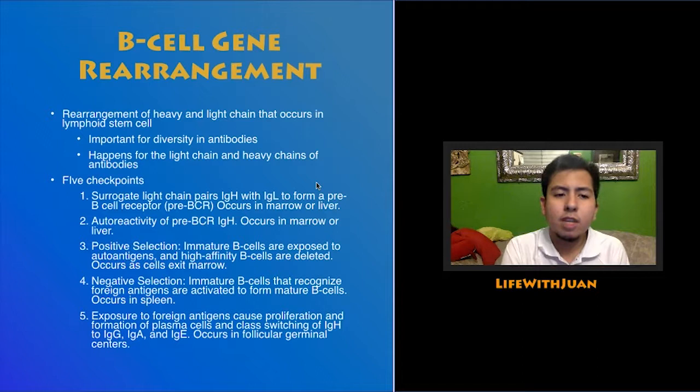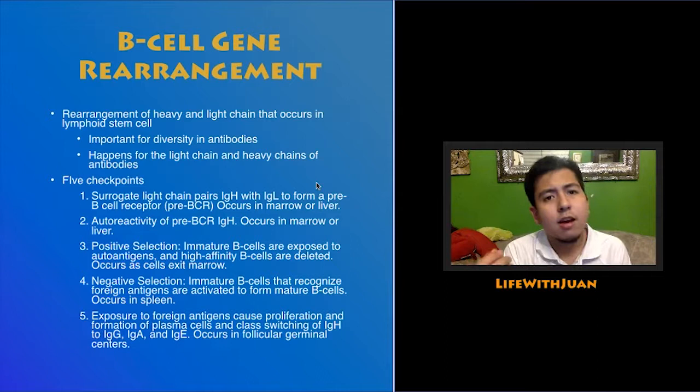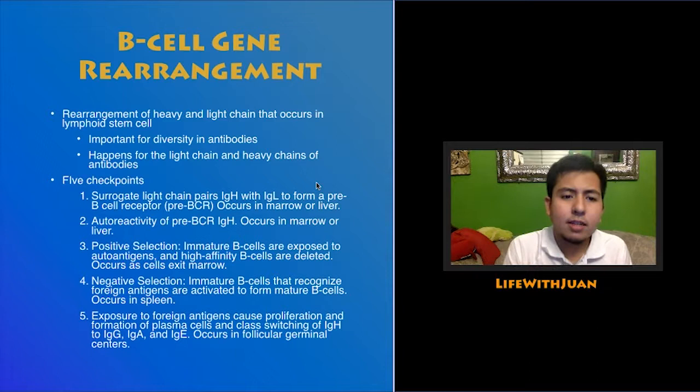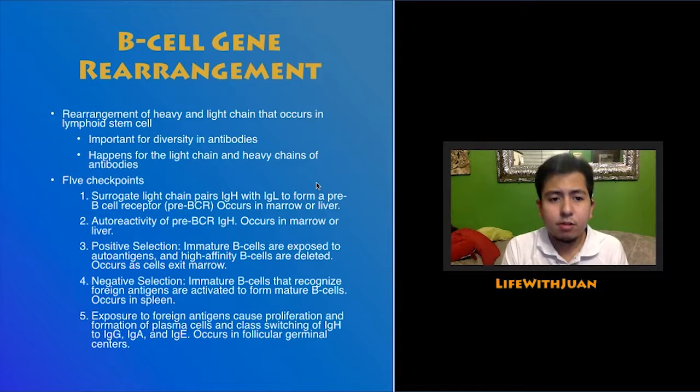There are five checkpoints of B cell gene rearrangement. The first checkpoint is the formation of the surrogate light chain pairs to form a pre-B cell receptor — a stand-in while the light chain has not yet rearranged — occurring in the bone marrow or in the liver if still in the womb. The second checkpoint is autoreactivity of the pre-B cell receptor, IGH, occurring in the marrow or liver — a test run of whether the pre-cell receptor is able to react to antigen exposure.